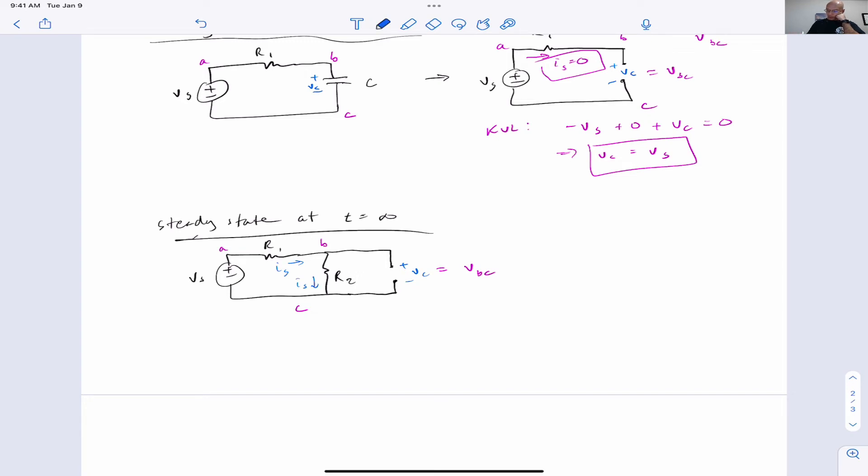And so we can get the voltage from B to C. It's just the voltage across R2. Actually, an easier thing than this, right? We don't know IS at this point, but we can just use voltage division because R1 and R2 are in series.